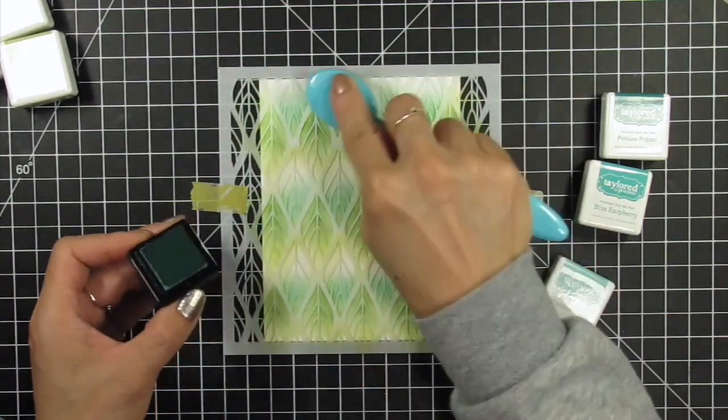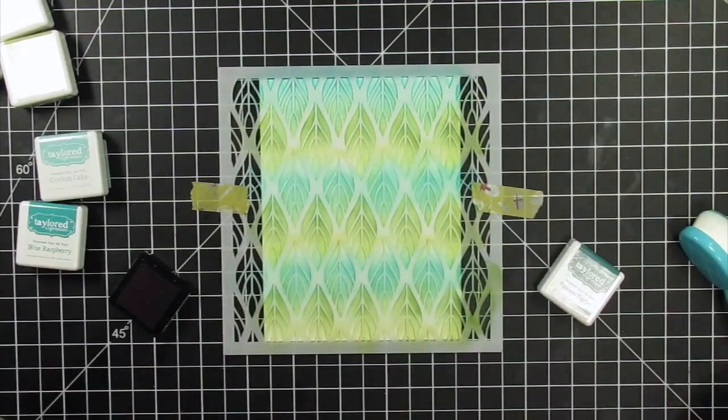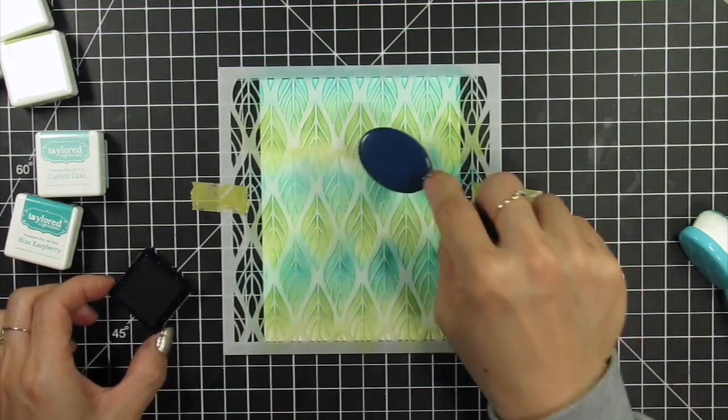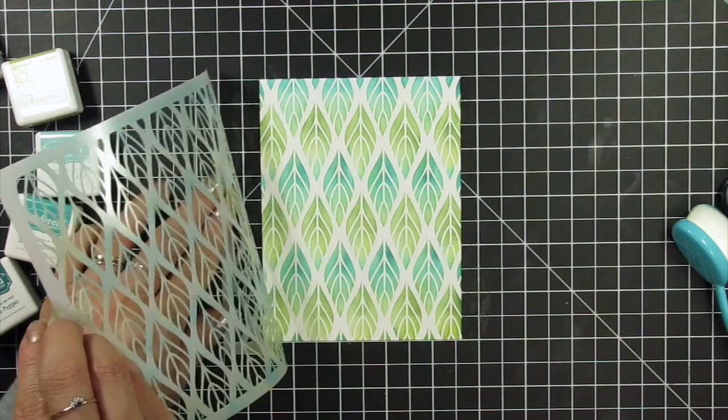Just like the Falling Happy stencil, my darkest shades will be at the top and run lighter towards the bottom. The green colors are Lime Zest, Pea Pod, and Cilantro. The blue colors are Confetti Cake, Blue Raspberry, and Poblano Pepper. Ooh, isn't this gorgeous?